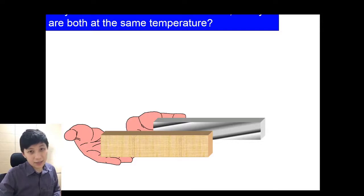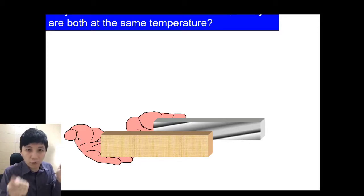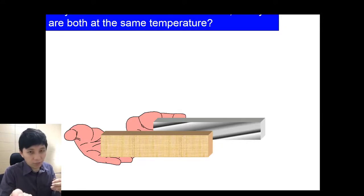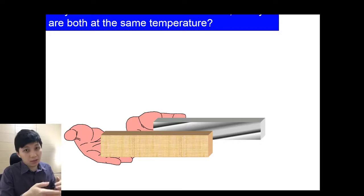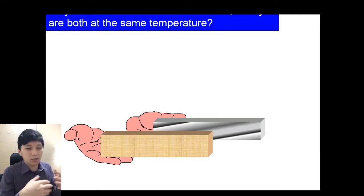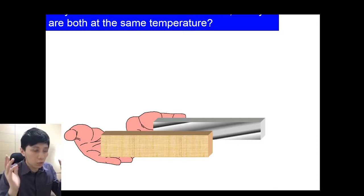Here is a very classic idea in thermal physics. If you try to get two rulers — one made of metal and another of wood or plastic — since they've been placed in the room for a long time, they must be at the same temperature. But when you touch the metal, you find it feels much colder than the wood or plastic. So why is that?